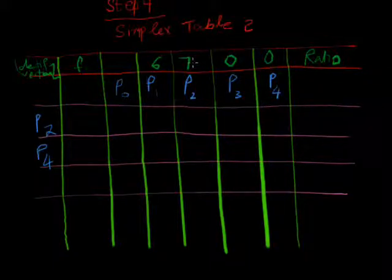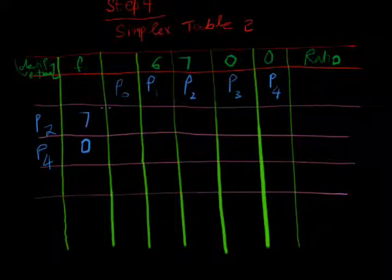So, this 7 will write here, and this is 0. This is the objective function.